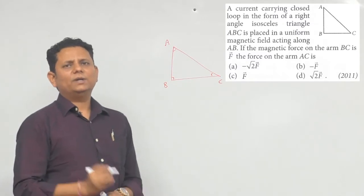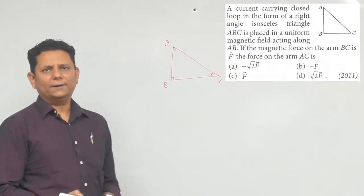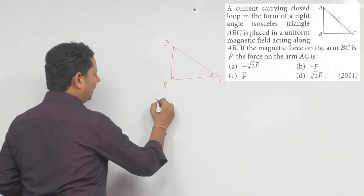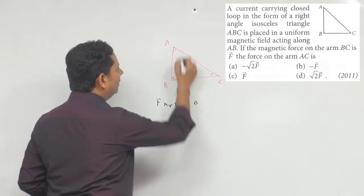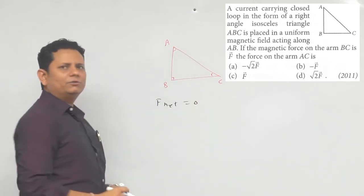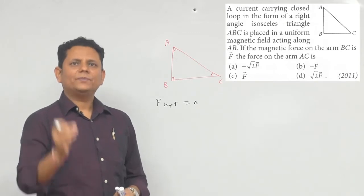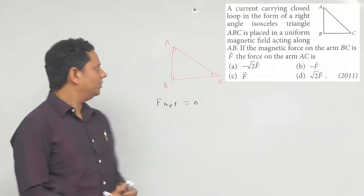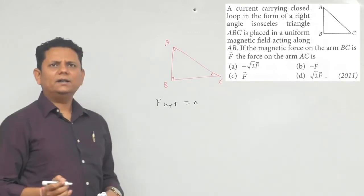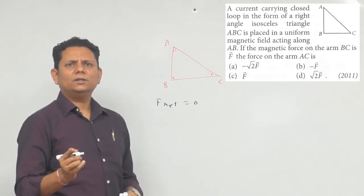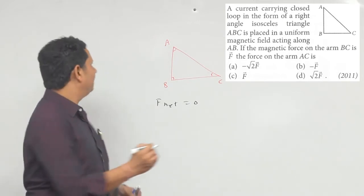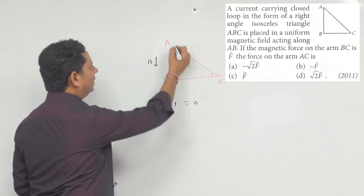The net force is zero. The individual forces sum to zero. The magnetic field is along AB.